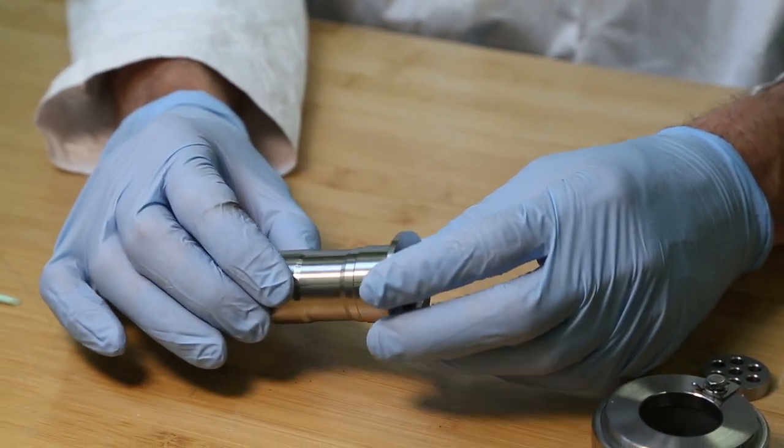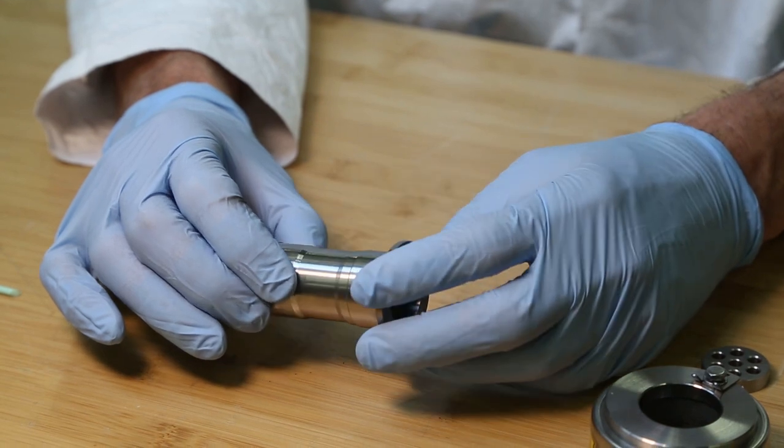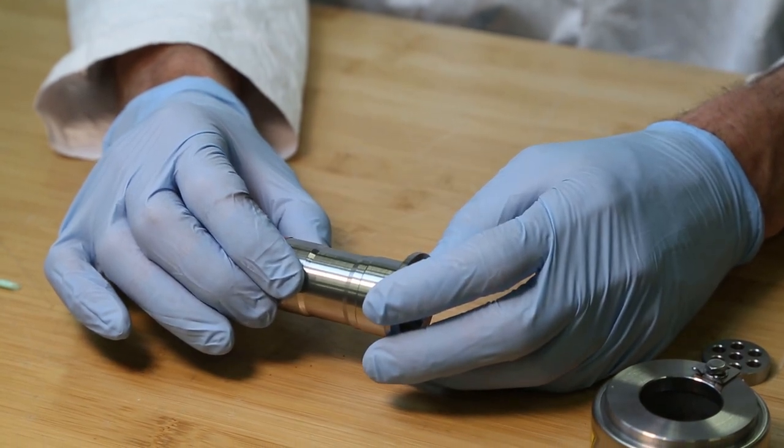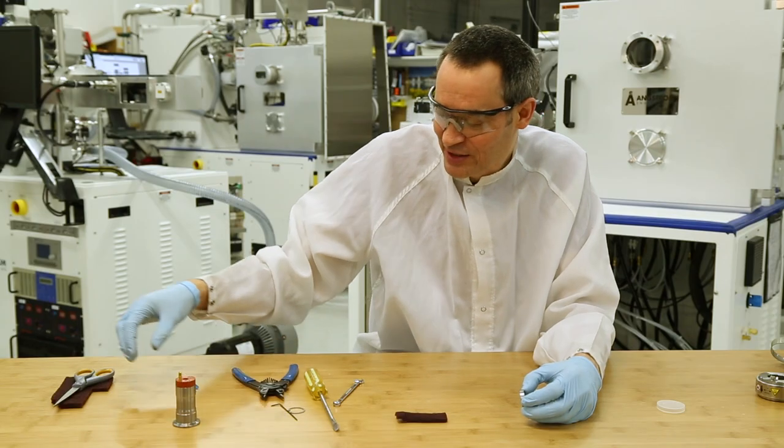I'll do the fasteners up snug. And that's it, and we're ready to put the pole piece back in and finish the assembly of the gauge. I'm going to set that aside.